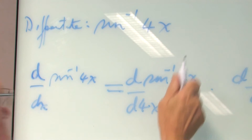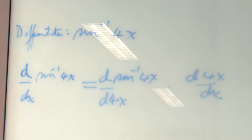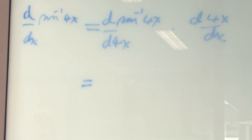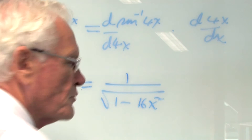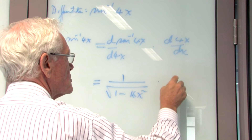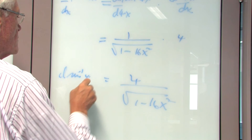Think of 4x as u. The derivative of arcsin(u) with respect to u is 1 over the square root of 1 minus u squared. Since u equals 4x, u squared equals 16x squared. And the derivative of 4x with respect to x is 4. So the answer is 4 over the square root of 1 minus 16x squared. That's all it is.